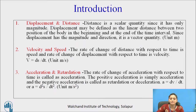Distance is a scalar quantity since it has only magnitude. But displacement is defined as the linear distance between two positions of a body at the beginning and at the end of a time interval. Since displacement has magnitude and direction, it is a vector quantity. Unit of displacement is meter.